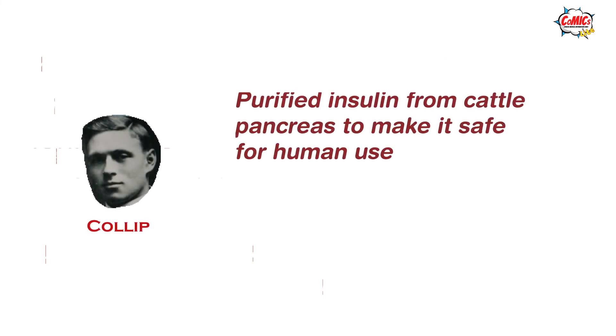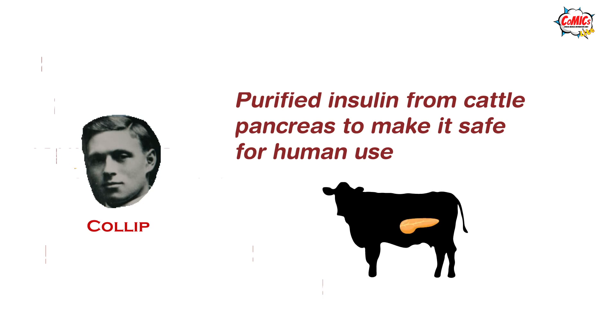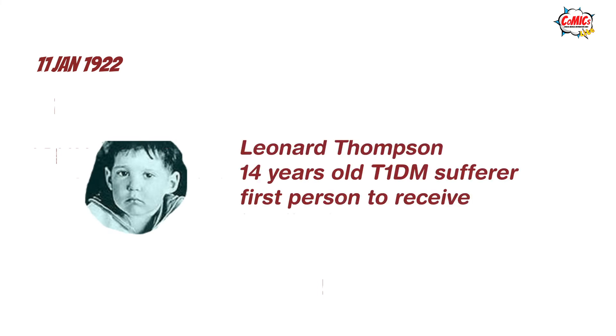James Colip, a biochemist, worked with the group to purify insulin so that it would be safe enough to test on humans. With his help, a more concentrated and pure form of insulin was developed from the pancreas of cattle. On the 11th of January 1922, Leonard Thompson, a 14-year-old boy suffering from type 1 diabetes, became the first person to receive an injection of insulin.